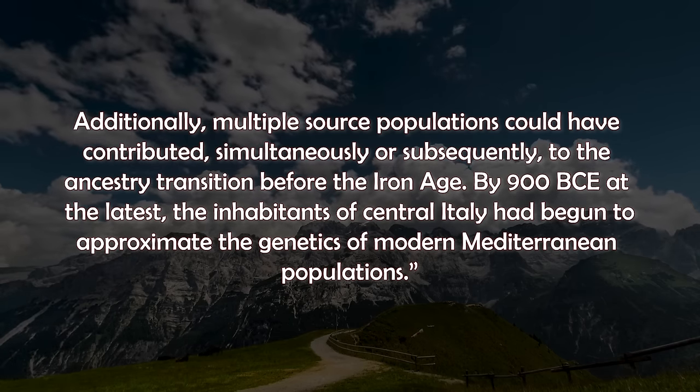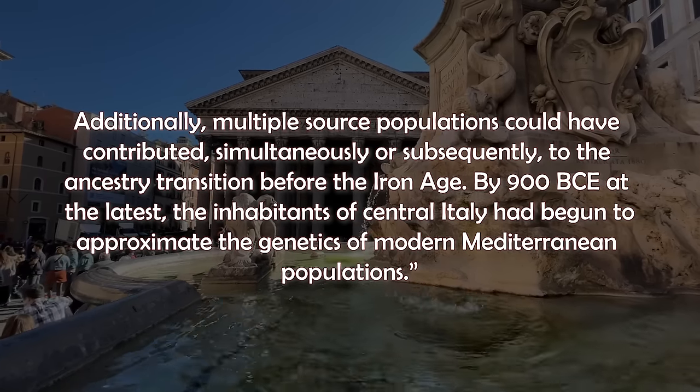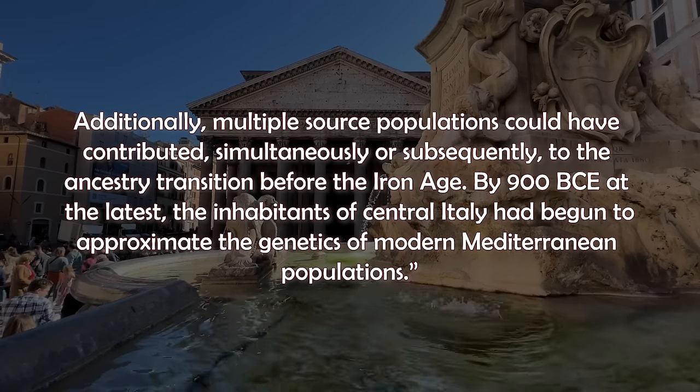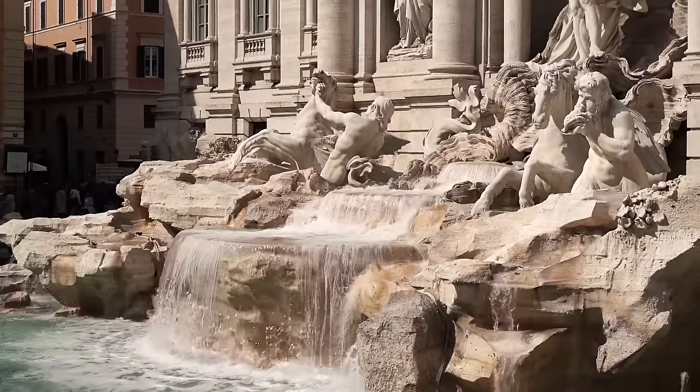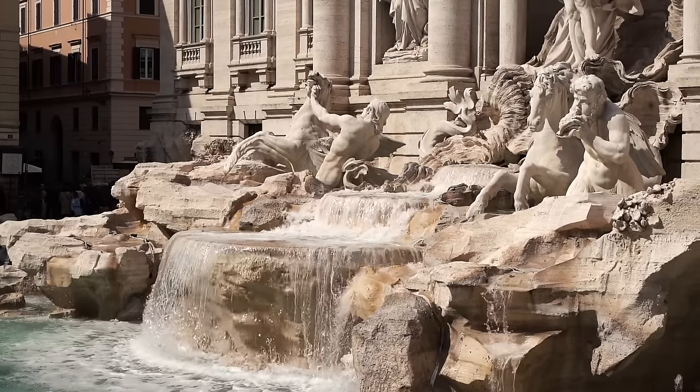By 900 BC at the latest, the inhabitants of central Italy had begun to approximate the genetics of modern Mediterranean populations. Followers of this channel will know how often steppe-related ancestry shows up in the historical ancestries of different populations across Europe. There is also a good amount of variation in these samples. As the authors point out, the Iron Age individuals exhibit highly variable ancestries, hinting at multiple sources of migration into the region during this period.